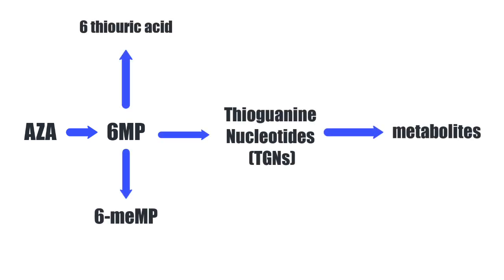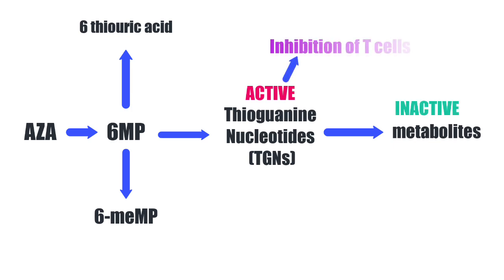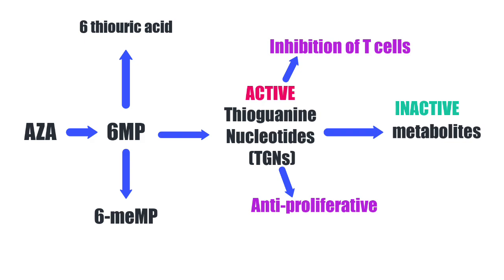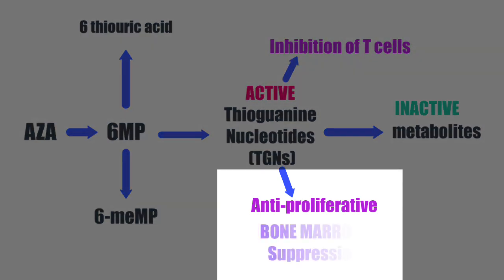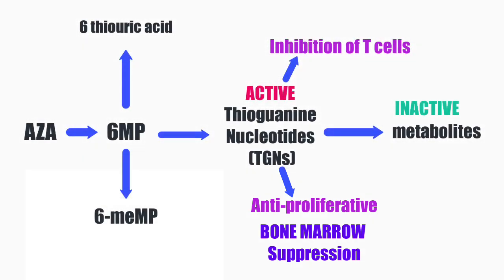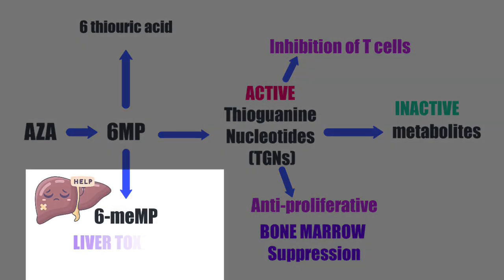Coming back to azathioprine being transformed into 6-MP. 6-MP undergoes a whole lot of metabolism into active metabolites and inactive metabolites. The active metabolites will elicit the immunosuppressant effect — some will act as purine analogues and some will reduce de novo purine synthesis. These various pathways lead to potential side effects. For example, this pathway promotes myelosuppression, which in some people could be life-threatening, whereas this pathway leads to liver toxicity.